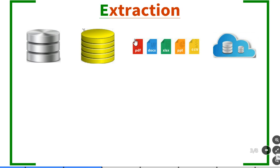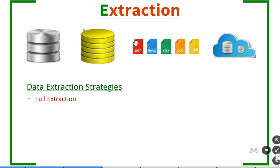The first phase is data extraction. Data from the various sources is extracted into the staging area as a first step in data warehousing. There are a couple of data extraction strategies. First is full extraction, wherein all the data from the operational and source systems gets extracted into a staging area. This generally happens in two scenarios: one is for the initial load when the data warehouse is being populated for the first time, or in scenarios where we do not have any strategy for identifying changed records.